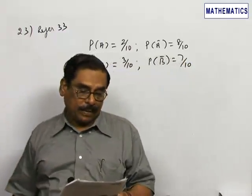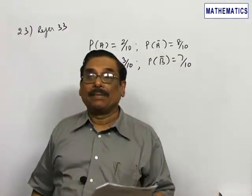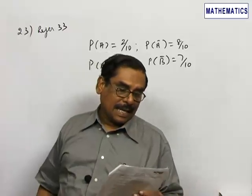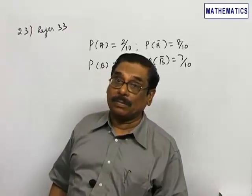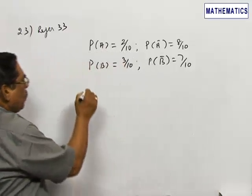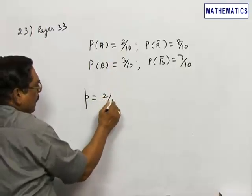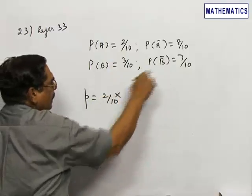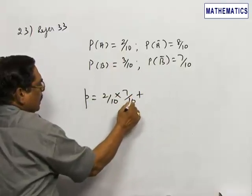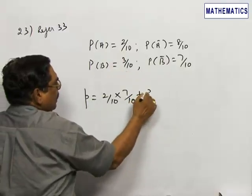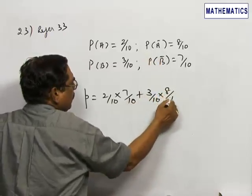Mark it immediately. The probability of only one of them passing the examination — that is, either A passes or B passes the examination but not both. Therefore the required probability will be equal to A passing (2 by 10) and B not passing (7 by 10), plus B passing (3 by 10) and A not passing (8 by 10).